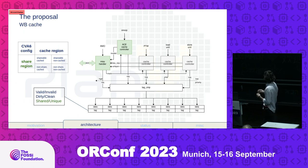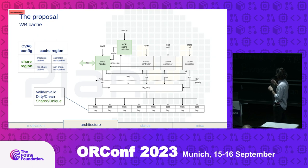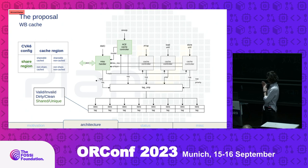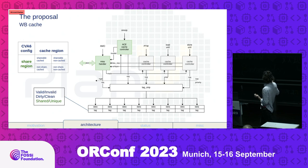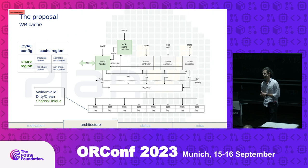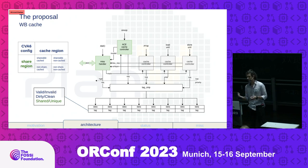We also extended the configuration of CVA6. We defined a new region which determines whether an address is in a shareable region or a non-shareable region, giving four possible configurations in total. Of course, we also had to modify the miss handler and the cache controllers to support requests coming from the outside and to generate the proper transaction types over the ACE interface.